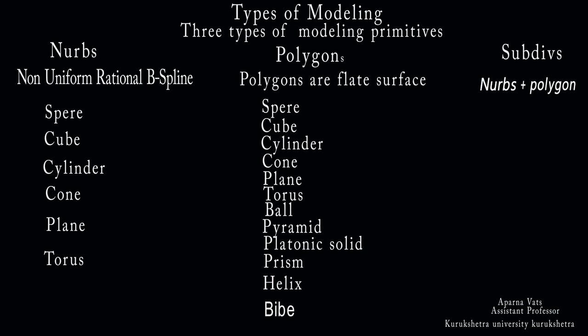Dear students, now I am going to discuss a lot of questions. First question: types of modeling. Second question: the components of NURBS — polygon primitives and subdivision primitives components. Third question: attributes of NURBS modeling, polygon modeling, and subdivision modeling.